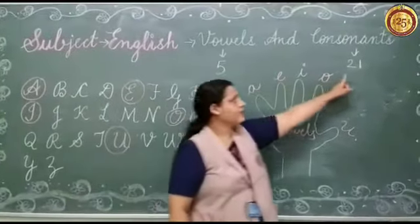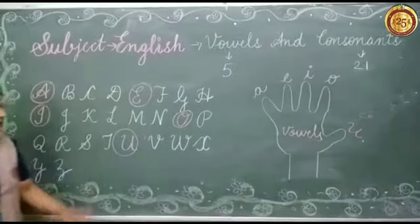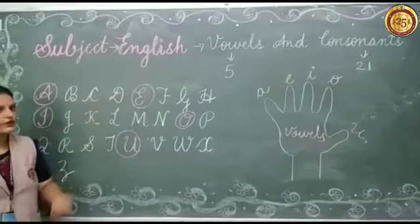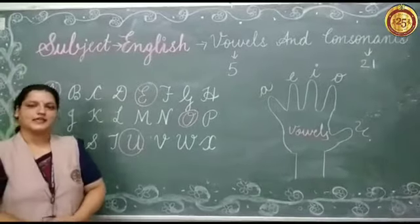And remaining 21 are consonants. So, look at the board again. 5 are vowels and remaining 21 are consonants. Okay?